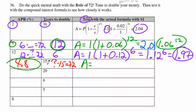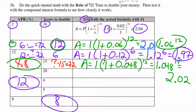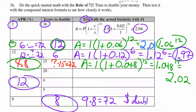What if we're retiring in fifteen years and want to double our money? Fifteen times what is seventy-two? Seventy-two divided by fifteen is four point eight percent. Let's try it with one dollar: one point zero four eight raised to the fifteen gives two point zero two — a little more than double. So the rule of seventy-two is just a handy way to do quick mental math calculations.